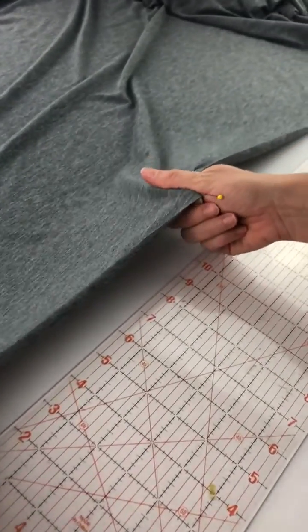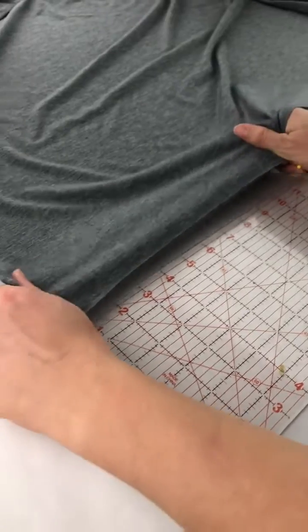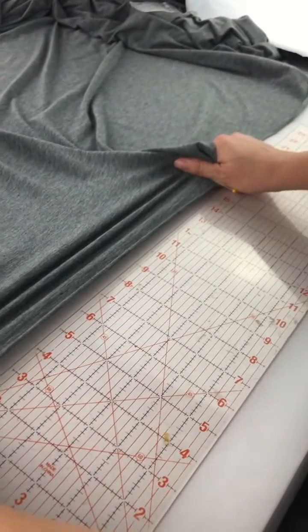You really have to grasp the fabric with your entire thumb and underneath as well. Grasp that whole area and then stretch it until it stops wanting to stretch. That gives you the true amount of stretch.